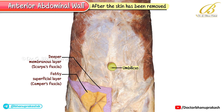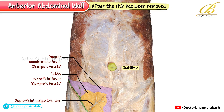In the illustration, you can notice that the membranous layer of superficial fascia has been partially retained on the right lower region. This layer is important because it carries superficial veins such as the superficial epigastric vein and the superficial circumflex iliac vein.